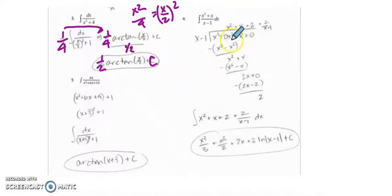Number three, I need long division. And I recognize that because I have a bigger degree in the numerator than I have in the denominator.